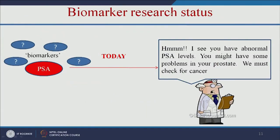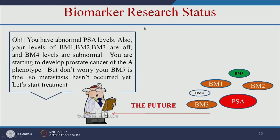This is the current biomarker research status. PSA means prostate-specific antigen. If a person has a high level of PSA, that means they have a high chance of getting prostate cancer. So if someone is diagnosed with a high PSA level, that indicates high risk for prostate cancer. In the future, we will be able to identify not only that PSA is overexpressed, but also check what other markers are involved in that expression.